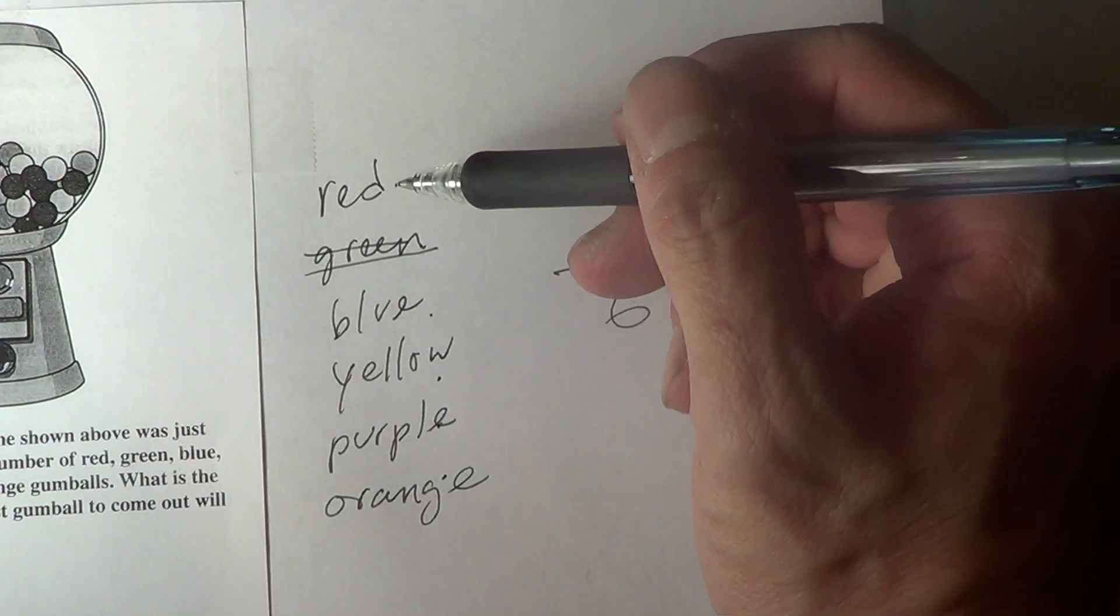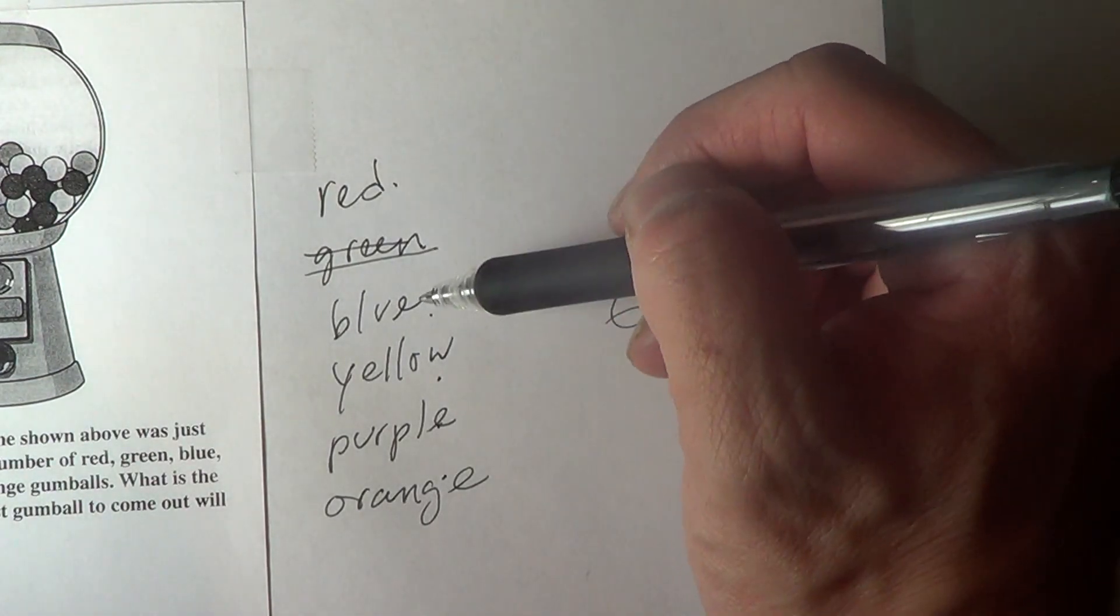And let's count how many non-green gumballs are. One, two, three, four, five.